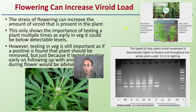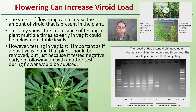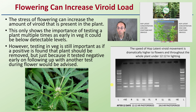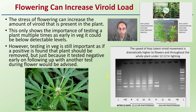Flowering can also increase the viroid load — the stress of flowering can increase the amount of viroid present in the plant. This shows the importance of testing a plant multiple times. In early veg, it could be below detectable levels — the viroid load may be very low and not proliferating. Testing in veg is still important, and if a positive is found, that plant should be removed immediately. But just because it tested negative in early veg, a follow-up test during flowering is advised, as the viroid load becomes much larger and easier to identify.